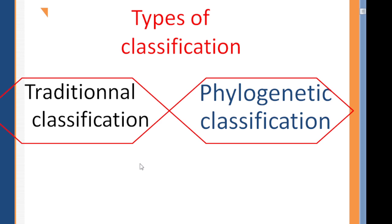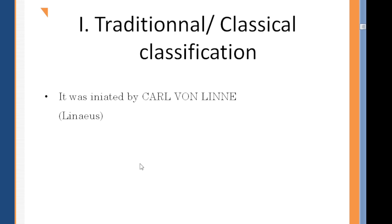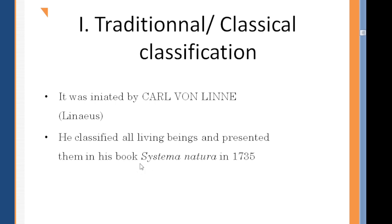Let's start with the first type, which is the traditional classification, also called classical classification. This classification was initiated by Carl von Linné, who is considered a pioneer of classification. His important research laid the groundwork for how we organize living beings.